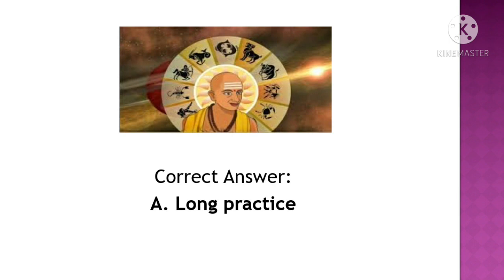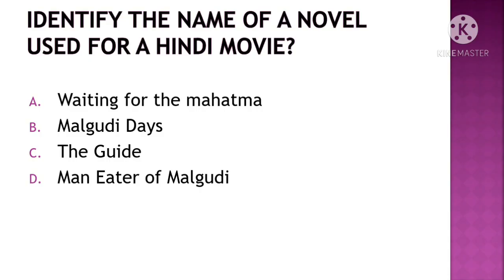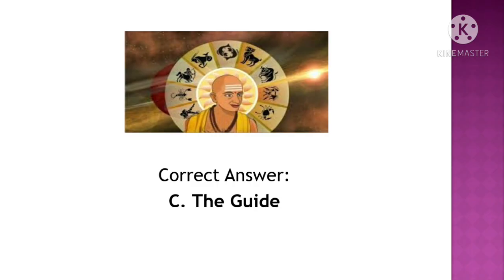Next question: Identify the name of a novel used for a Hindi movie. The options are: A. Waiting for the Mahatma, B. Malgudi Days, C. The Guide, D. The Man-Eater of Malgudi. The correct option is Option C, The Guide.